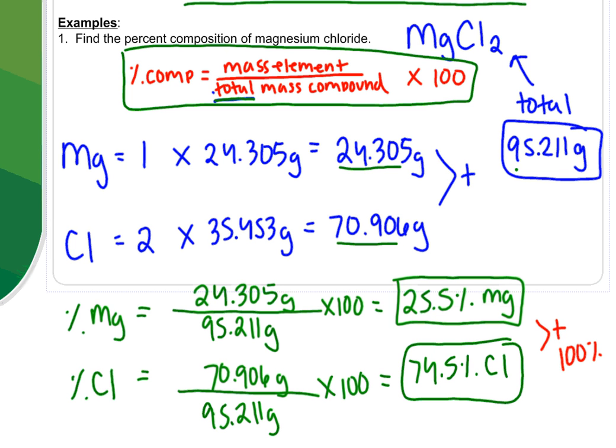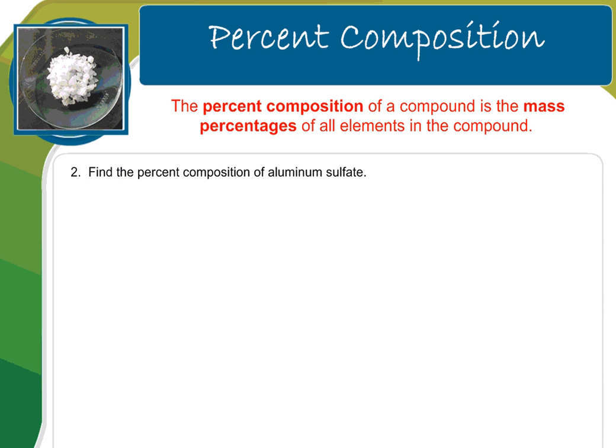Let's do another example. This next example is quite a bit more difficult. And the reason is because the formula or the compound is more difficult. So it's aluminum sulfate. We're supposed to find the percent composition of that. Well, aluminum sulfate is Al2(SO4)3. So the first thing I need is a total mass. So I've got aluminum, I've got sulfur, and I've got oxygen. Well, I know that I've got two atoms of aluminum, I've got three atoms of sulfur, and I've got 12 atoms of oxygen.